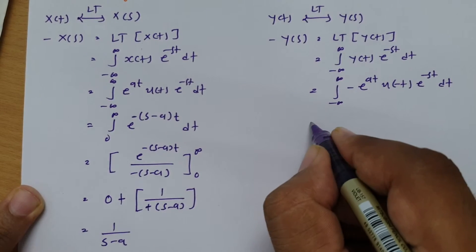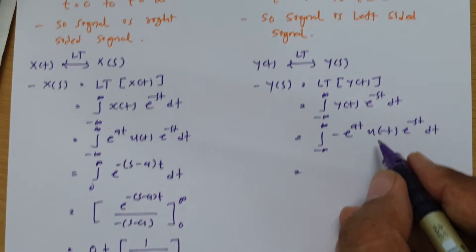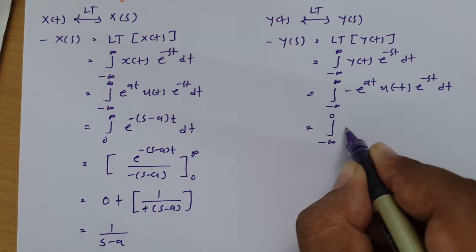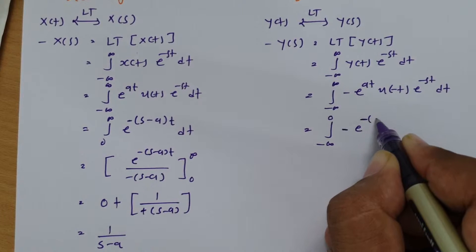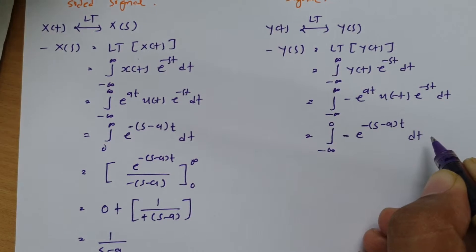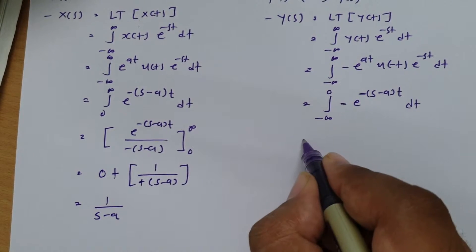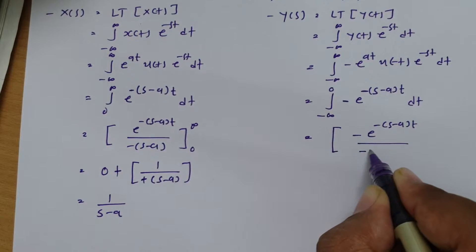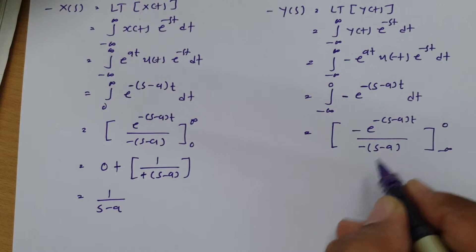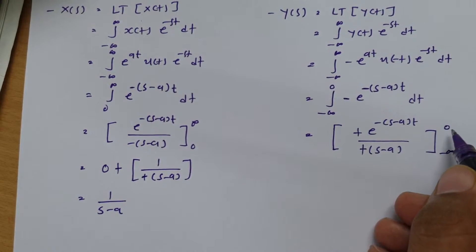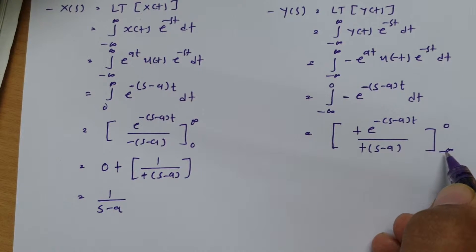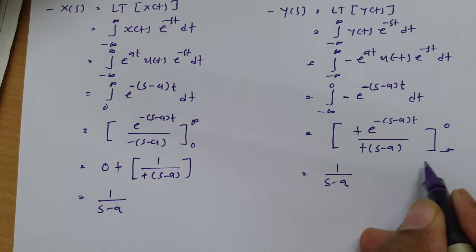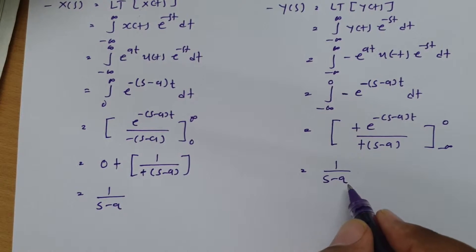Similarly, for y(t) equals minus of e to the power at times u(minus t), since u(minus t) varies from minus infinity to 0, the integral is from minus infinity to 0 of minus e to the power minus(s minus a)t dt. Integrating gives minus e to the power minus(s minus a)t divided by minus(s minus a), evaluated from minus infinity to 0. The minus-minus becomes plus. When t equals 0, the term equals 1; when t equals minus infinity, the term goes to 0. So Y(s) equals 1 divided by (s minus a).